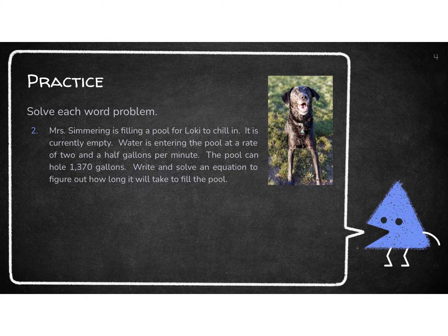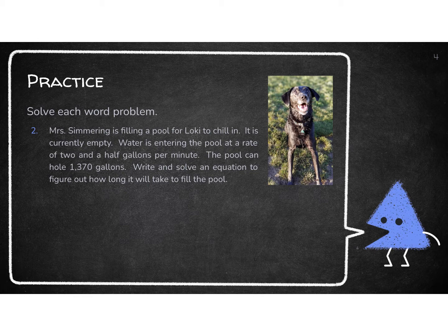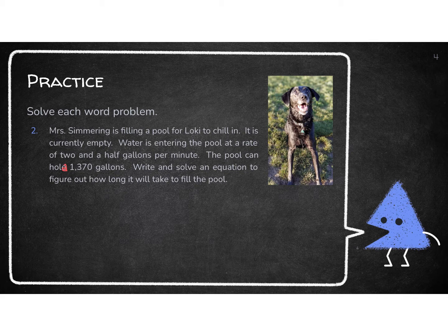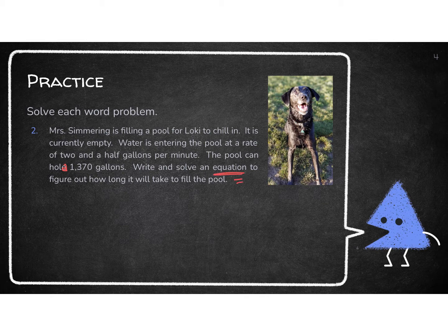Let's look at this next example here. I have Ms. Simreen and she's filling in a pool for Loki. Loki's her puppy to chill in. It's currently empty. Water is entering the pool at a rate of two and a half gallons per minute. The pool can hold 1,370 gallons. We want to write and solve an equation this time. So that doesn't mean an equal sign to figure out how long it will take to fill the pool. So we're always going to say, well, where are we starting with?